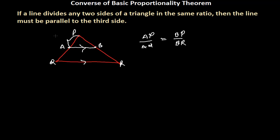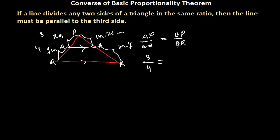If the intersection is like X meters and Y meters, then it should be M times X and M times Y respectively — so you get the same ratio. For example, if AP over PB is 3 over 4, then the corresponding segments would be M times 3 and M times 4, giving the same ratio. So the way they have been intersected, the ratio of the parts on one side is exactly the same as on the other side. Given this condition, we need to prove that this line is parallel to the third side. Let's start proving with a good figure.